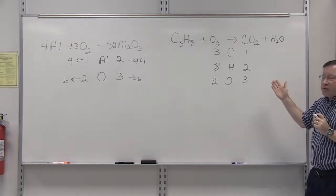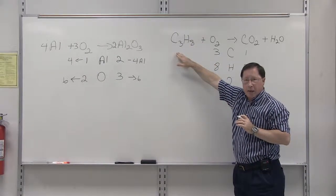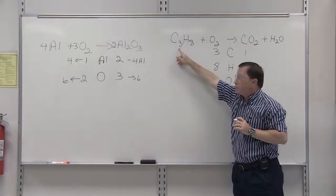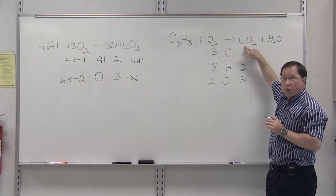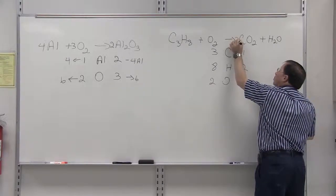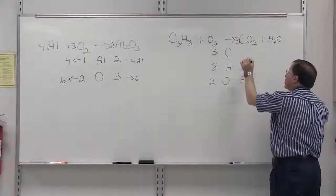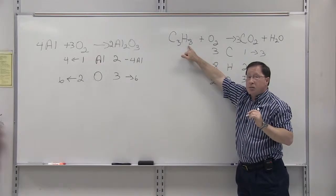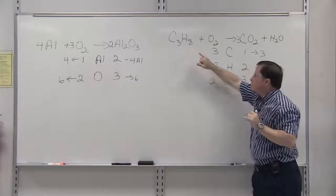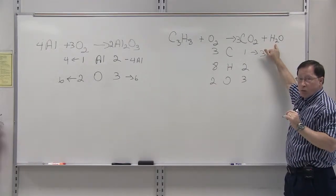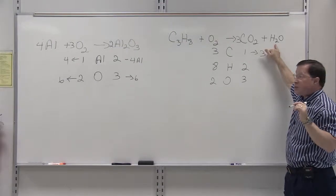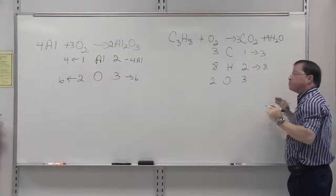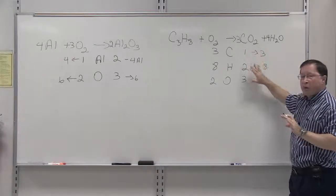When we look at this equation, propane C3H8 is our most complicated molecule. So if we have three carbons here, in order to have three carbons on the right-hand side, we're going to put a three here, and that's going to change our carbon count to three. If we have eight hydrogens on the left-hand side, it's eight versus two. If we multiply two by four, that will give us eight hydrogens. We have carbon and hydrogen balanced.